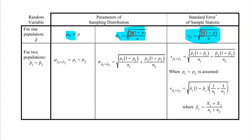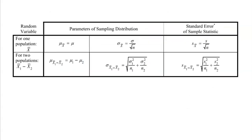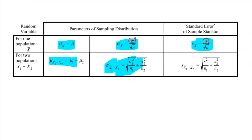We also look at the difference between two sample proportions — again, there's a mean and a standard deviation for that as well. There's a second set of formulas for means: the mean and standard deviation of a sampling distribution, as well as the standard error. If you don't know the standard deviation of the population and have to use the standard deviation of your sample, that's when we call it standard error. We also have formulas for working with two samples and looking at the difference.